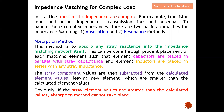The resonant method will be covered in part 5. Let's take a closer look at what the absorption method is. This method is to absorb any stray reactance into the impedance matching network itself. This is done through careful placement of each matching element — for example, a capacitor placed in parallel with the stray capacitor to remove the stray capacitor effect, or an inductor placed in series with a stray inductance to cancel the stray inductance effect.